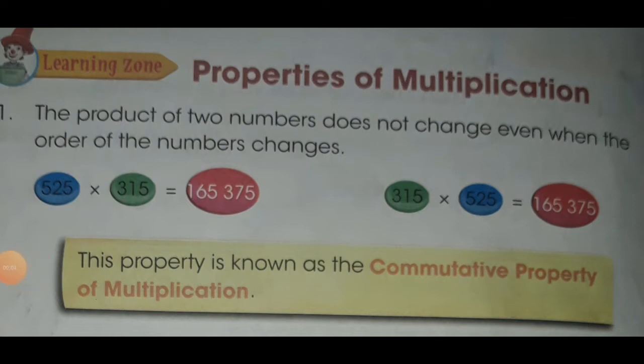On page number 44, the first property of multiplication: the product of two numbers does not change even when the order of the numbers changes. Here you can see two numbers multiplying with each other but the product is the same. This property is known as the commutative property of multiplication.